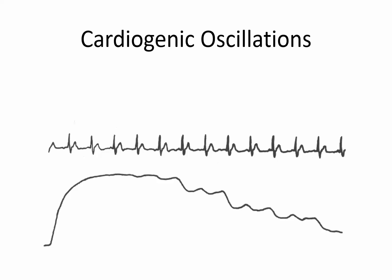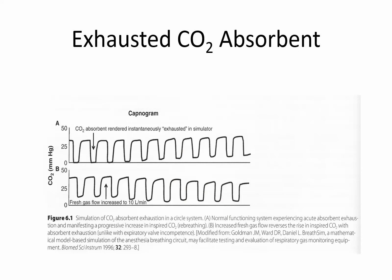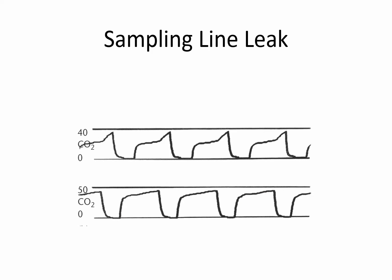Cardiogenic oscillations are regular bumps in the capnogram that coincide with QRS complexes on the EKG or at least with heart rate. Exhausted CO2 absorbent produces an elevated baseline on the capnogram. While waiting for the absorbent to be replaced, you can alleviate or eliminate the problem by increasing the fresh gas flow rate — effectively making the system a non-rebreathing system, at which point the CO2 absorber becomes irrelevant. A sampling line leak causes a classic steeple sign.